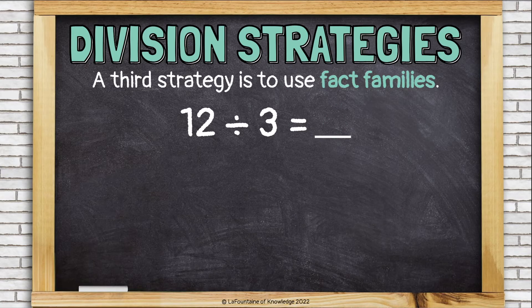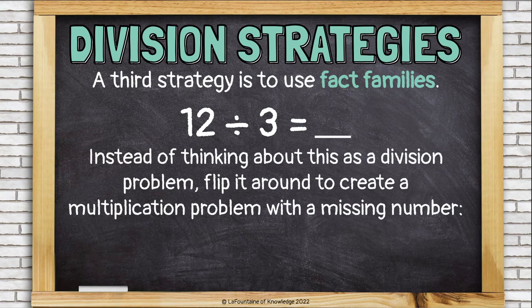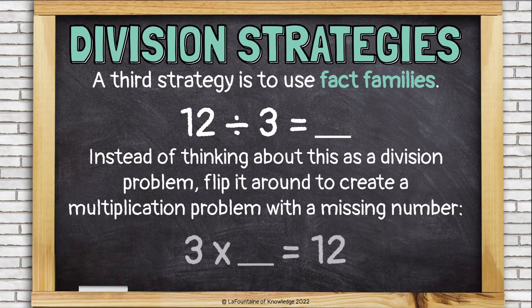Another strategy is to use fact families. Instead of thinking about this as a division problem, flip it around to create a multiplication problem with a missing number. Instead of thinking about 12 divided by 3, think about 3 times what equals 12? 3 times 4 equals 12, so 12 divided by 3 equals 4.